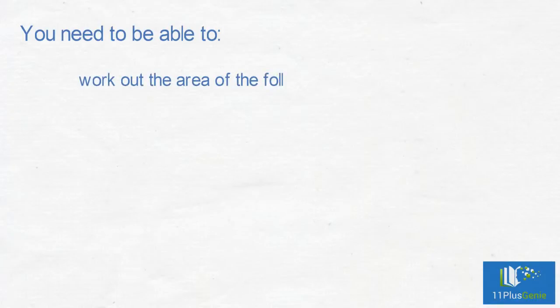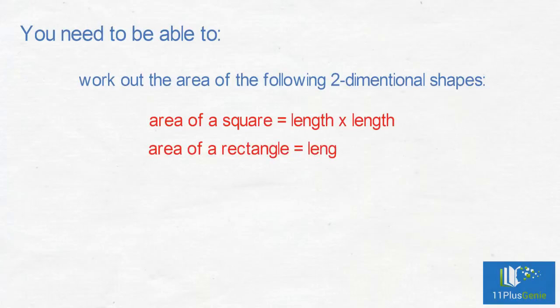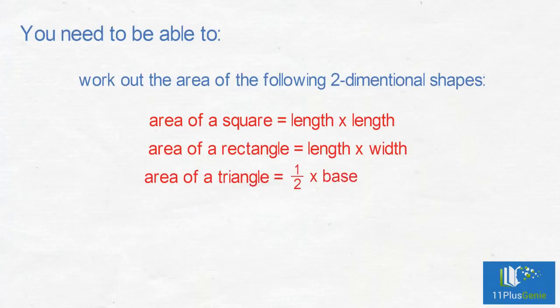You need to be able to work out the area of the following simple two-dimensional shapes: area of a square, which is length times length; area of a rectangle, which is length times width; and area of a triangle, which is half times base times height.